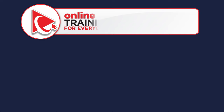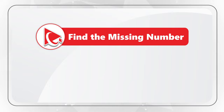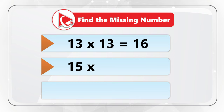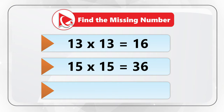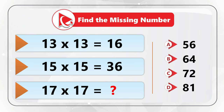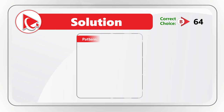Here's one of my favorite questions, which requires you to use your critical skills and imagination. You need to find the missing number, presented with three different expressions. The first expression is 13 multiplied by 13 equals 16. The second expression is 15 multiplied by 15 equals 36. And the last expression, the one missing the number, is 17 multiplied by 17 equals the missing number. You have four choices: A 56, B 64, C 72, and D 81. The pattern here is that instead of using traditional multiplication, you need to add the digits and then multiply them.